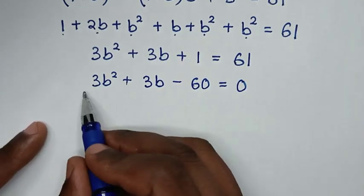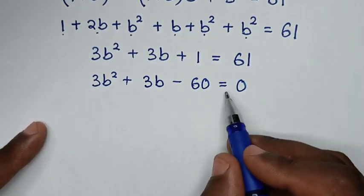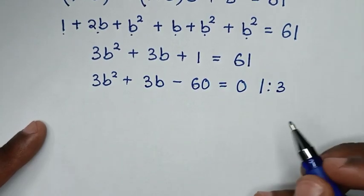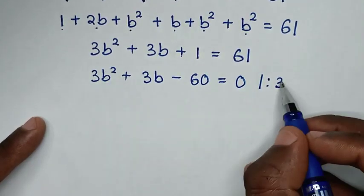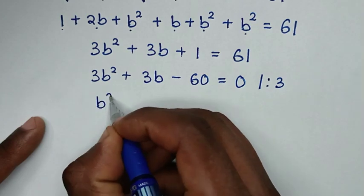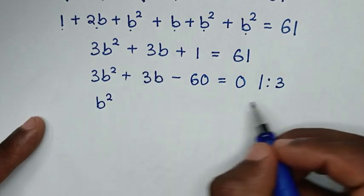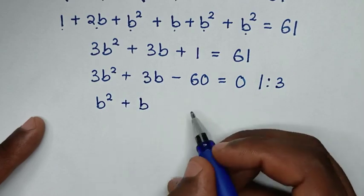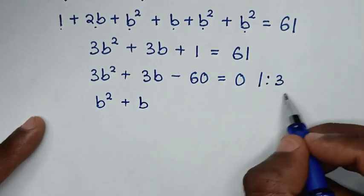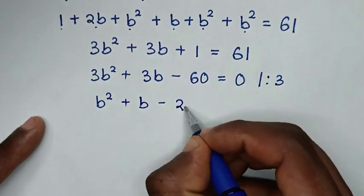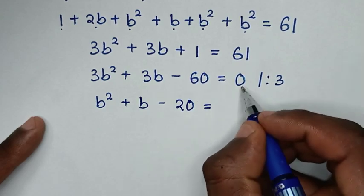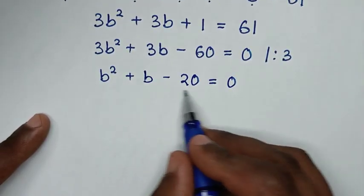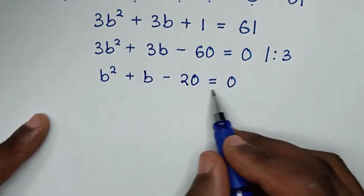This quadratic equation is divisible by 3, so we divide the whole equation by 3. This gives b² plus b minus 20 equals 0.